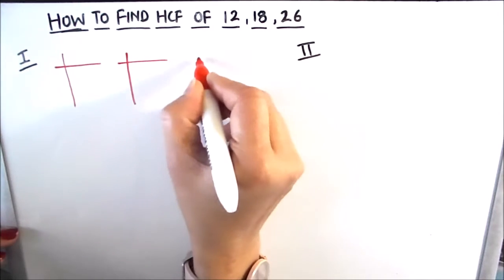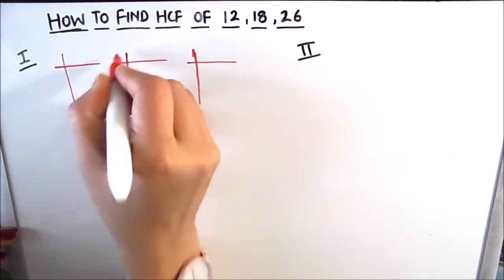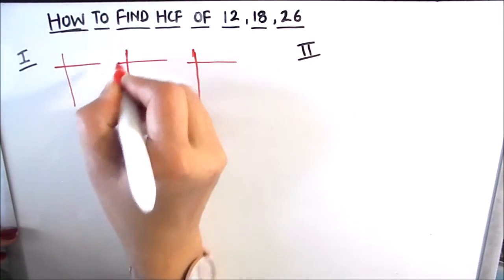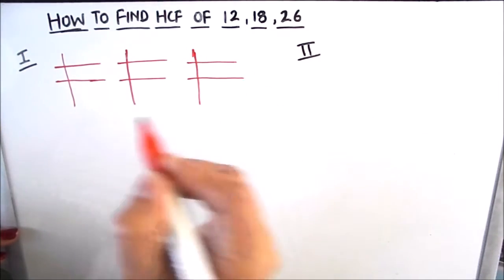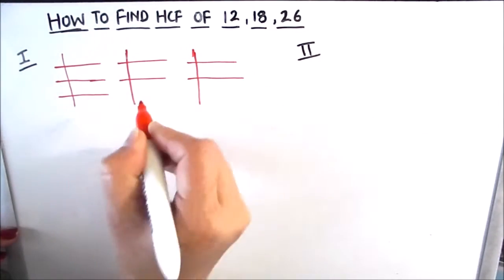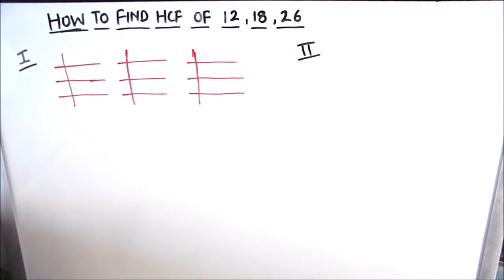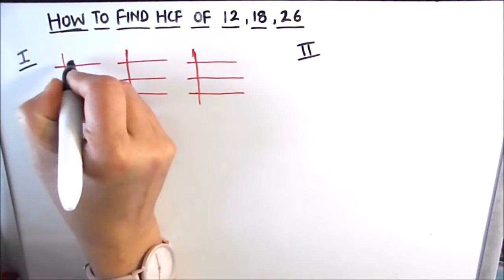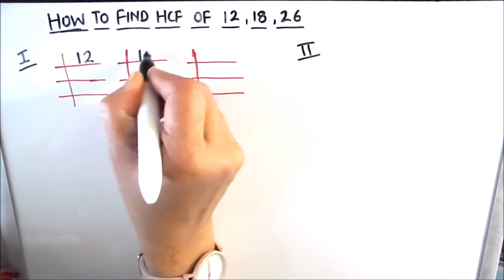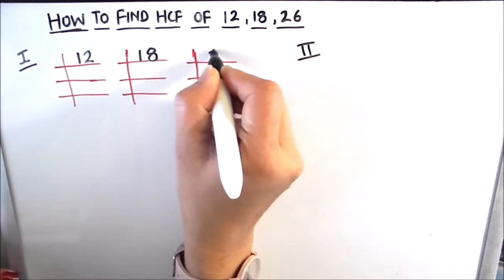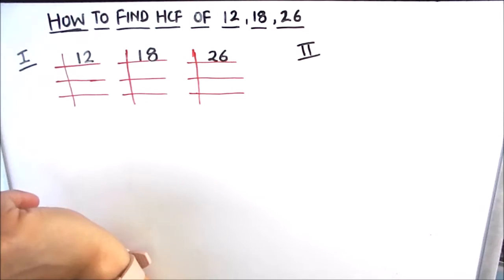In our first method, we find the factors of all three numbers separately using different factor trees. After finding the common factors, we find the HCF of the three numbers. Here I have made three factor trees and we will be using these to find the factors of 12, 18, and 26.